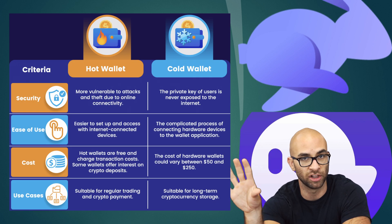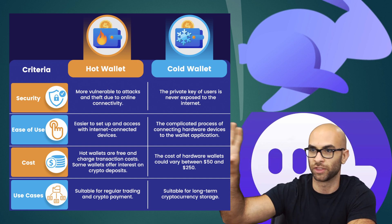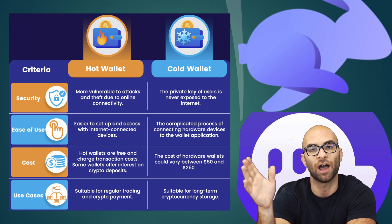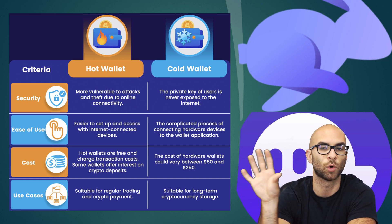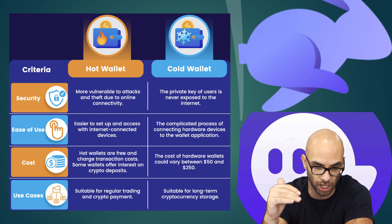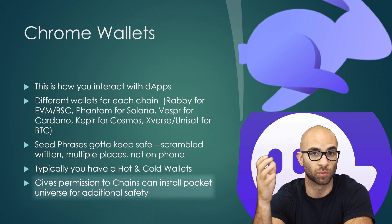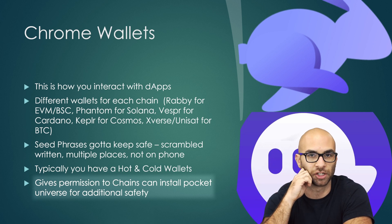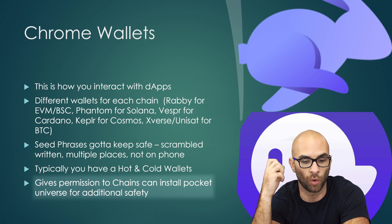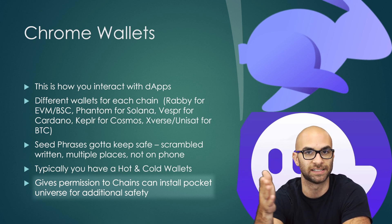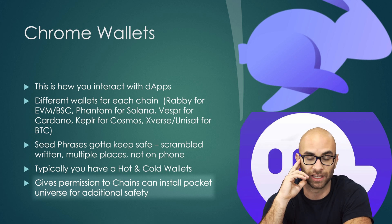I like to have a hot wallet, which is what I use to interact within the ecosystem or within these different dApps, and then I'll have a cold wallet, which I have with a hardware wallet, that I store a lot of my assets in and don't touch. The reason you want to do this is because you have to give permission to these different dApps with your wallet, and sometimes there can be scams, exploits, or what they call wallet drains. If you didn't have your money separated, you could have all of your money taken away.